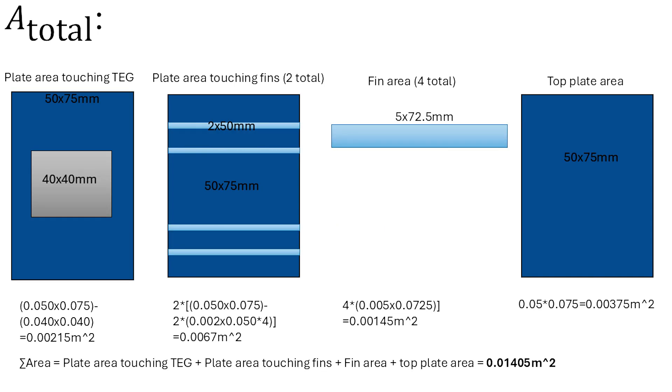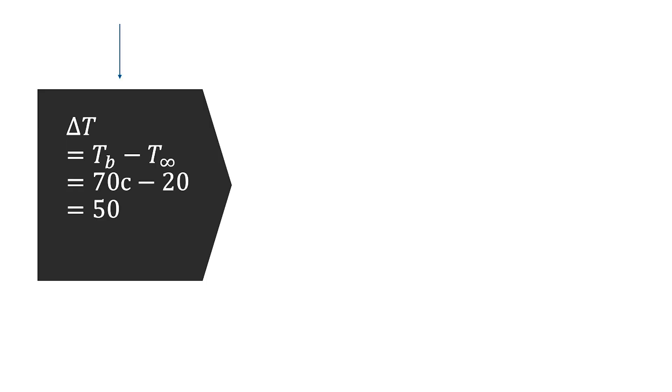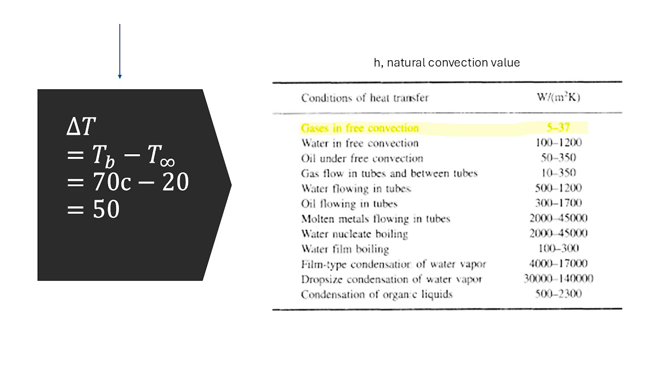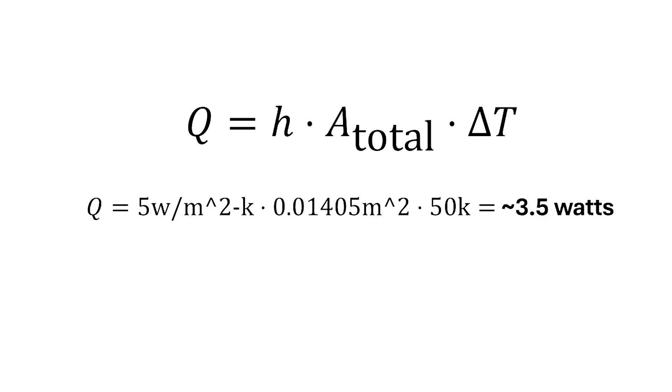To get the total area of our heatsink that's exposed to the air, I started by multiplying the lengths and widths of our plates, and then subtracting the things that were touching them, such as the module itself and the sides of the fins. I also of course added in the fin area, and in total we get an area of 0.01405 meters squared. Since we measured the cold side to be about 70 C, and the surrounding air is around 20 C, we get a temperature difference of about 50 Kelvin. And since the air is completely still, I'll use the lower value for H of around 5 watts per meter squared Kelvin. Putting it all together, our very crude rudimentary heatsink can only dissipate around 3.5 watts.